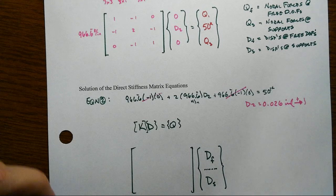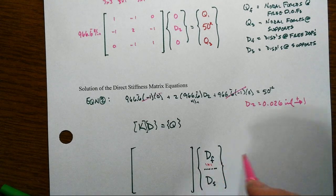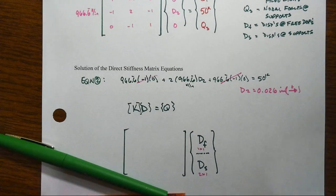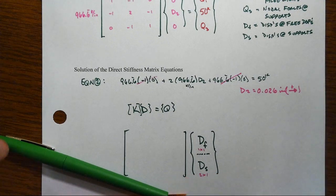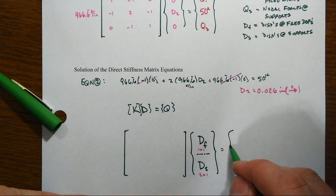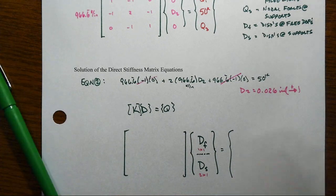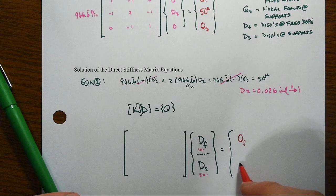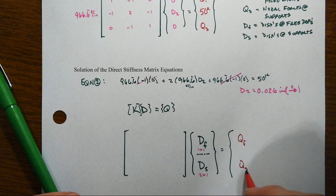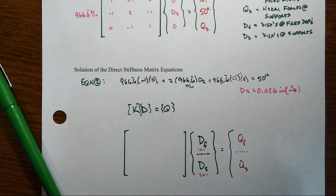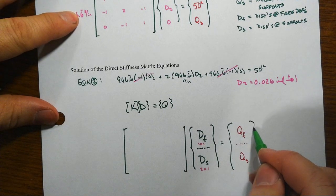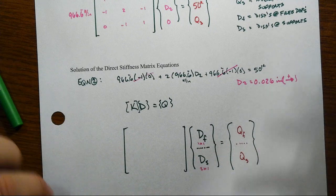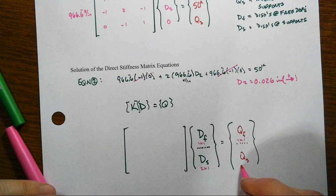Let's write that down. This is going to turn out to be a 1 by 1, and this is going to turn out to be a 2 by 1 in this specific instance. Likewise then for the forces, we'd have the nodal forces associated with the free degrees of freedom, and then we'd have the reaction forces associated with the supports. In this case, that would be a 1 by 1 and that would be a 2 by 1.